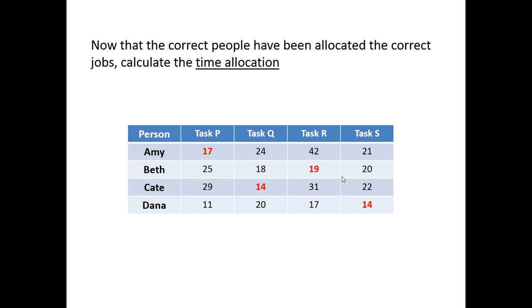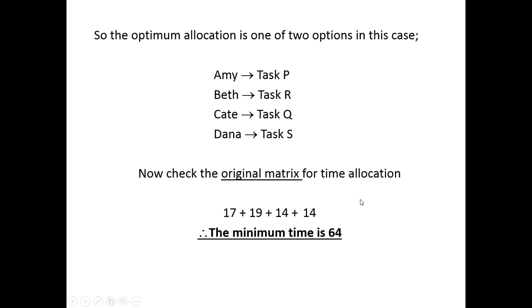The final job is to now calculate the overall time allocation. So we look at the fact, we go back to our original times. Amy received task P, Beth received task R, Kate received task Q, and Dana received task S. So the total time for this project will be 17 plus 19 plus 14 plus 14. So the minimum time that we complete this task allocation with one person doing one job each is 64.